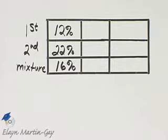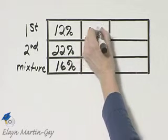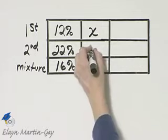Now we want to know the amount of the 12% saline solution that should be added to the 80 cubic centimeters. So let's let X be the amount of the 12% saline solution.